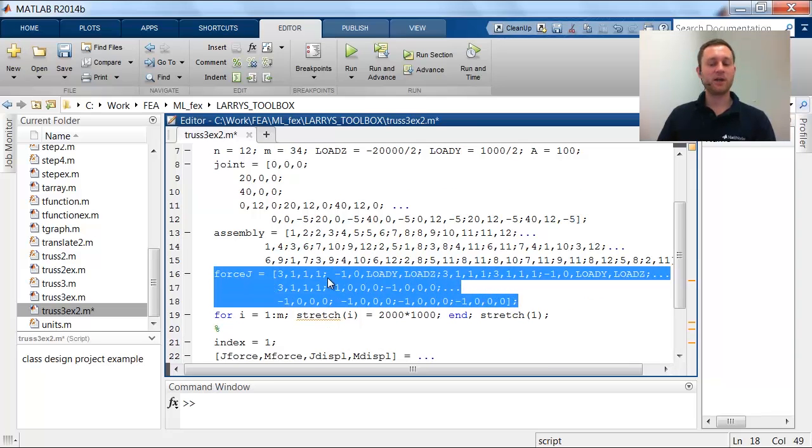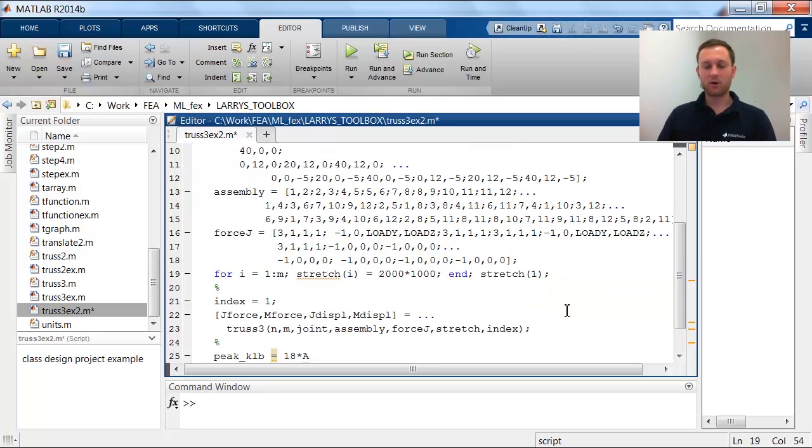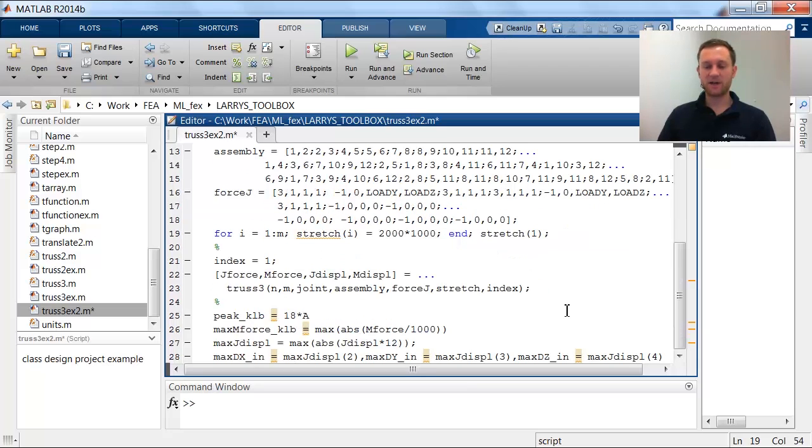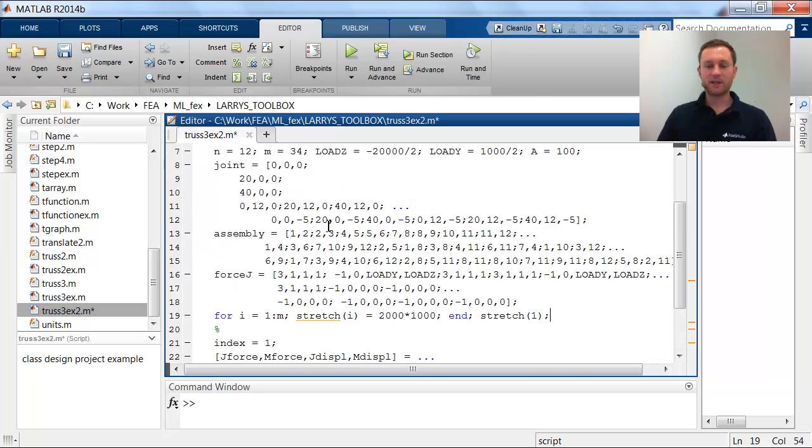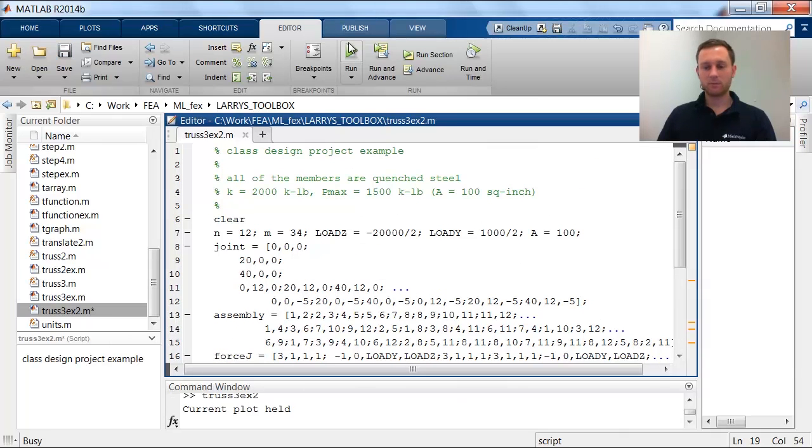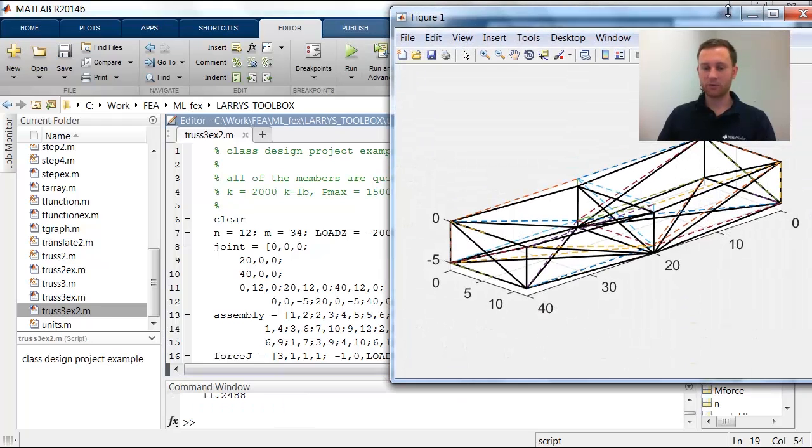He also introduces the load, which is nothing but saying which force is acting on which node. It's in that case, 4 by 12 vector. And this is already it. Specifying some calculations at the end as the maximal force. And this is already the example. So let's just go through.